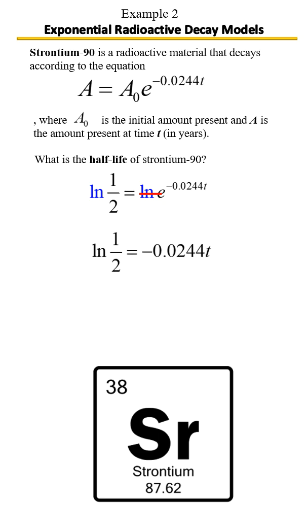Here's what we're left with. And now just one last step, we'll have t all by itself. We're going to divide by -0.0244. Whatever you do to one side, you do to the other.